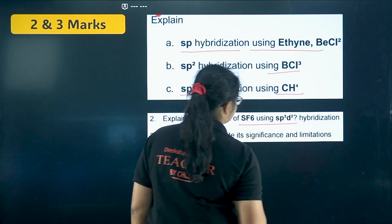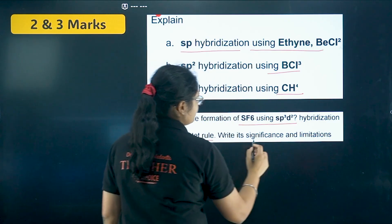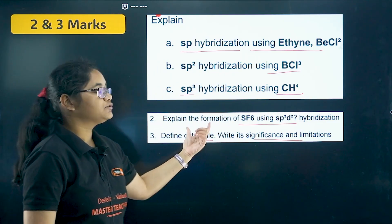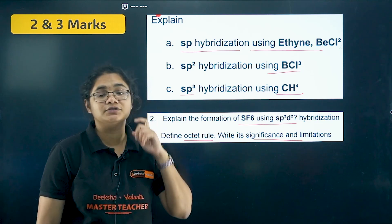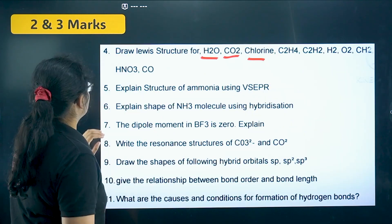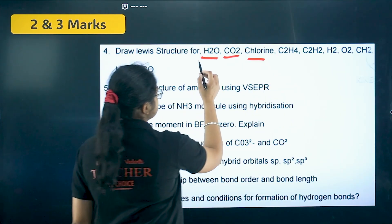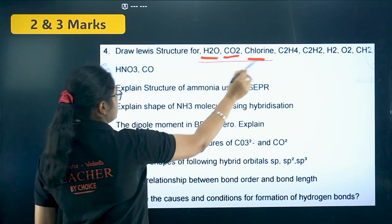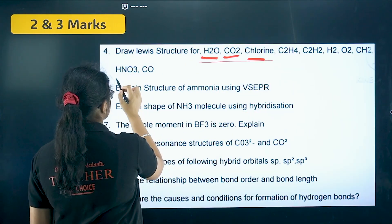Next, SP3D2 hybridization formation, octet rule and its significance and limitations — questions can also be asked about the exceptions to the octet rule. Now you have to draw the Lewis structure for H2O, CO2, and chlorine — all these molecules, their Lewis structures you should prepare.